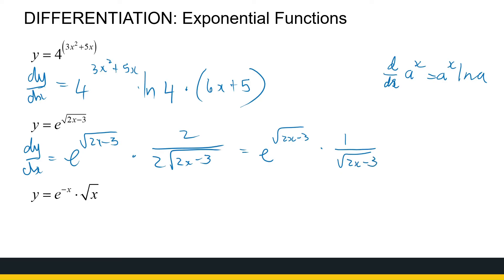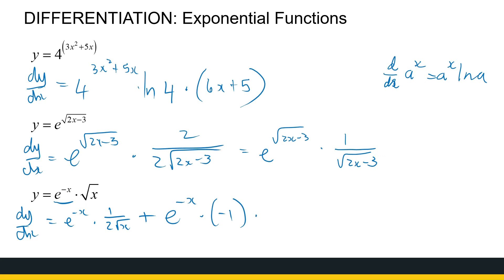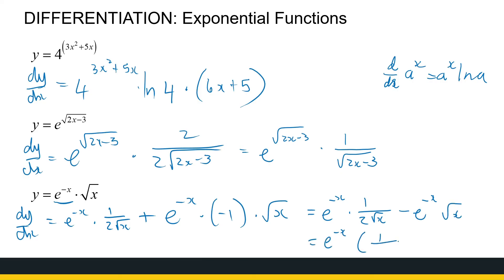The last example: y equals e to the power minus x times root x. Here we have the product rule — that's the first thing to identify. The derivative is the first function times the derivative of the second, plus the derivative of the first times the second. The derivative of root x is 1 over 2 root x. For the derivative of e to the power minus x, it's e to the power of function times the derivative of the function — the derivative of minus x is minus 1 — so that gives minus e to the minus x. Tidying up: e to the minus x times 1 over 2 root x, minus e to the minus x times root x. You can factor out e to the minus x to get e to the minus x times the quantity 1 over 2 root x minus root x.